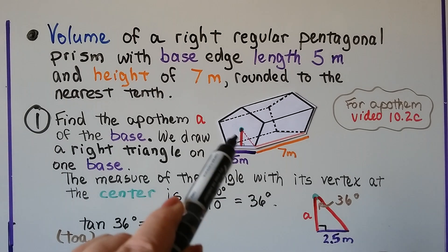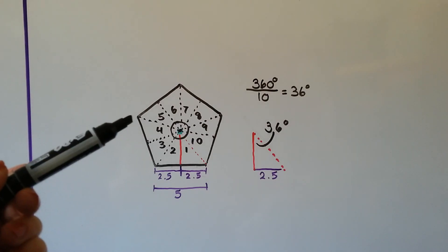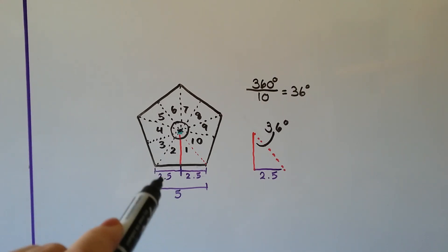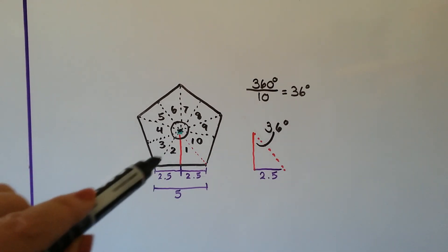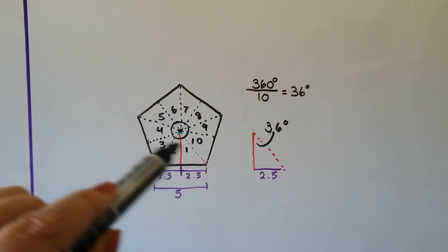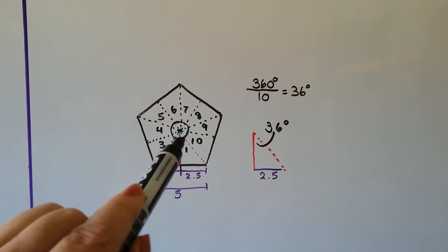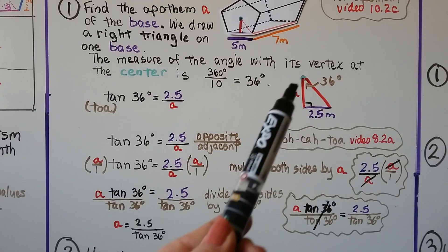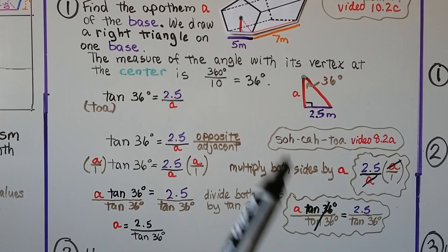The angle at the center of this right triangle is 36 degrees. We got that by doing 360 degrees divided by 10, because splitting each of the 5 sides in half gives us 10 small right triangles around the center. Each inside angle is therefore 36 degrees. We know the half-base is 2.5 meters since the full edge is 5 meters.